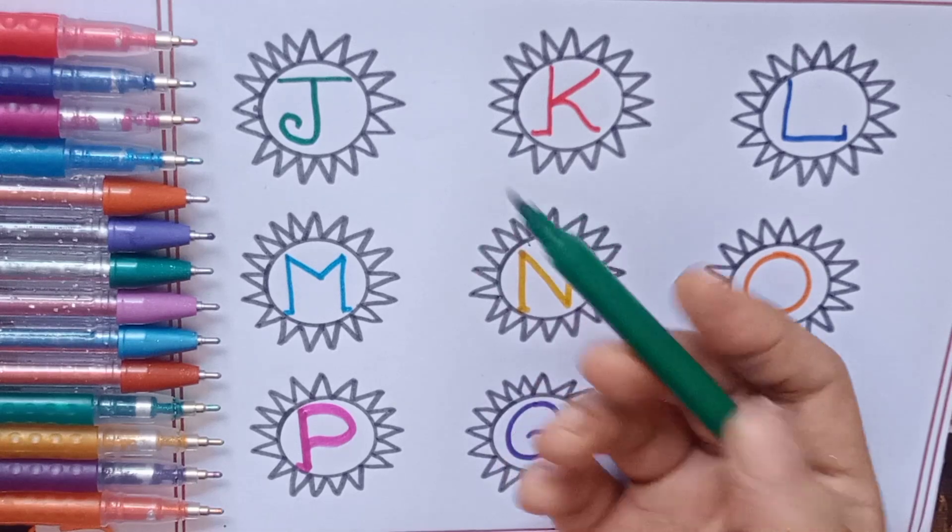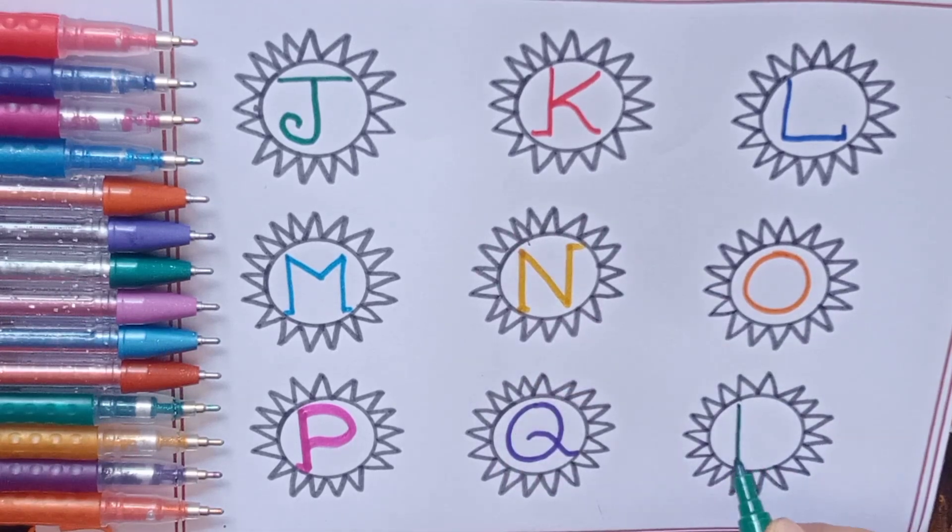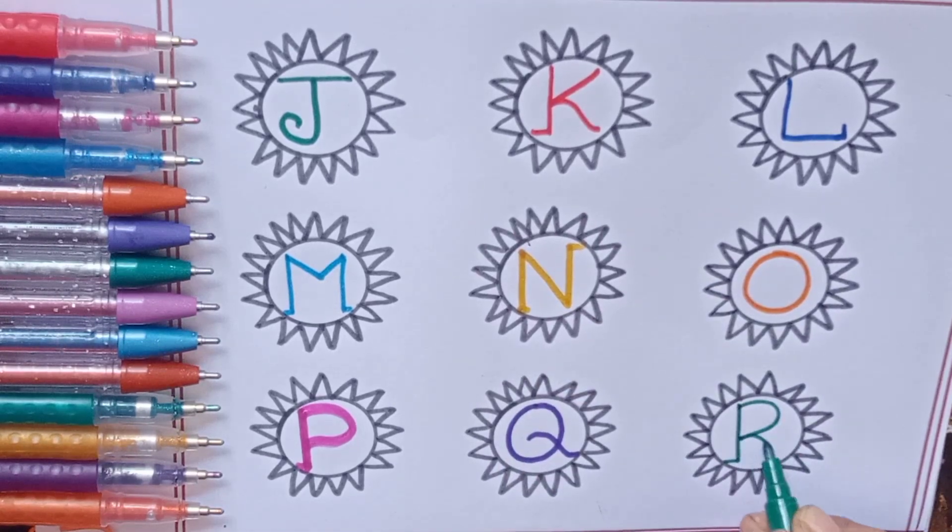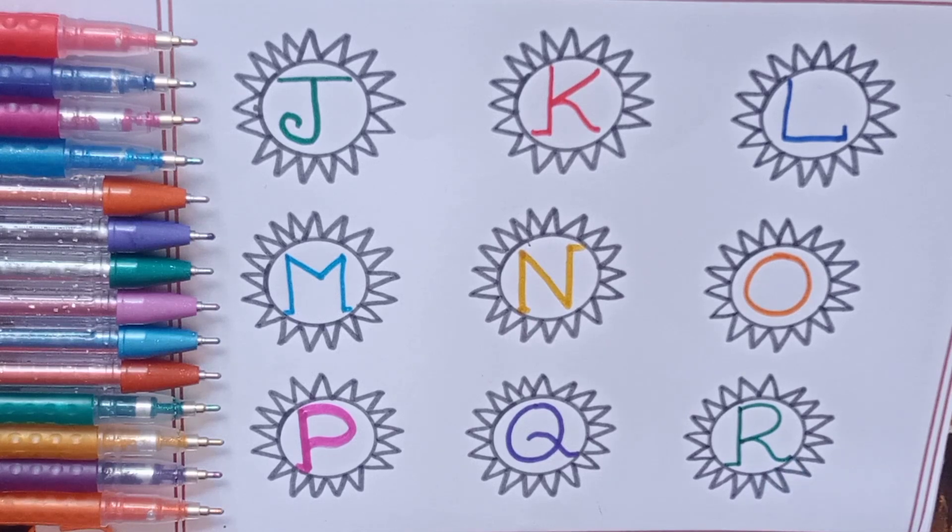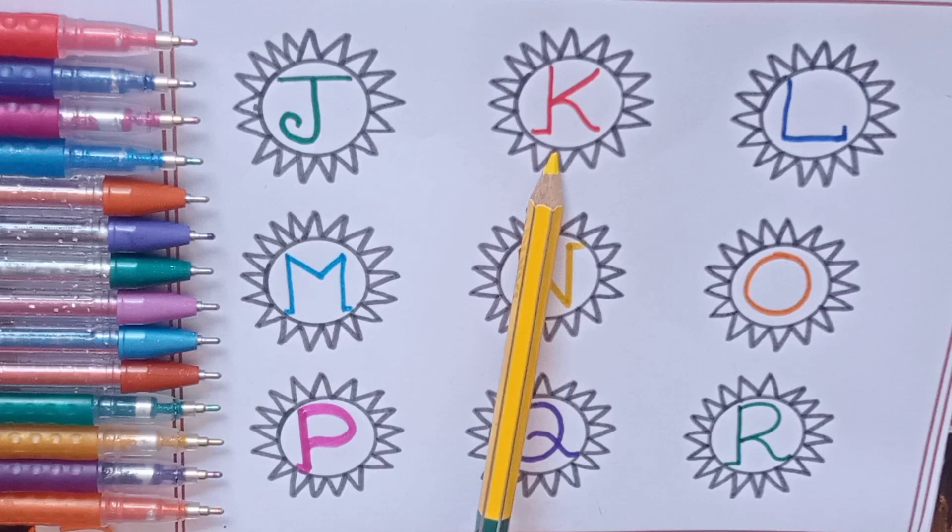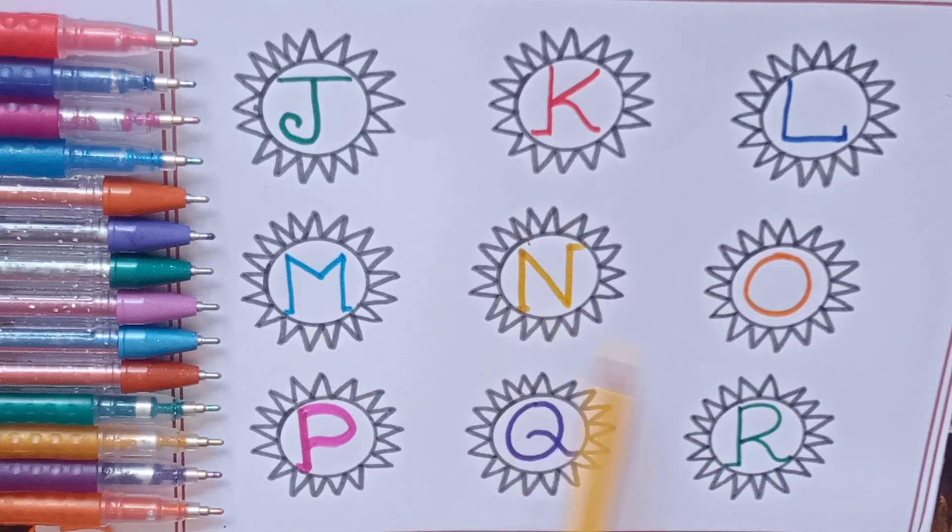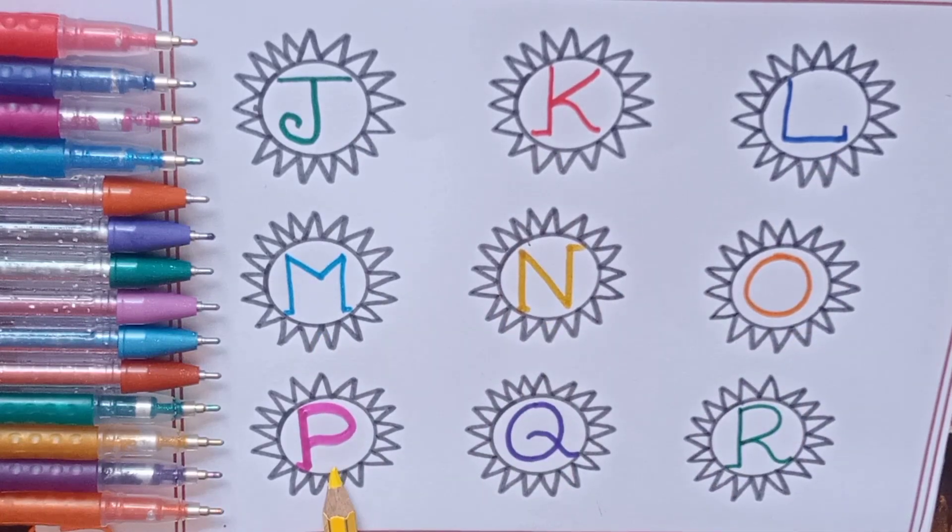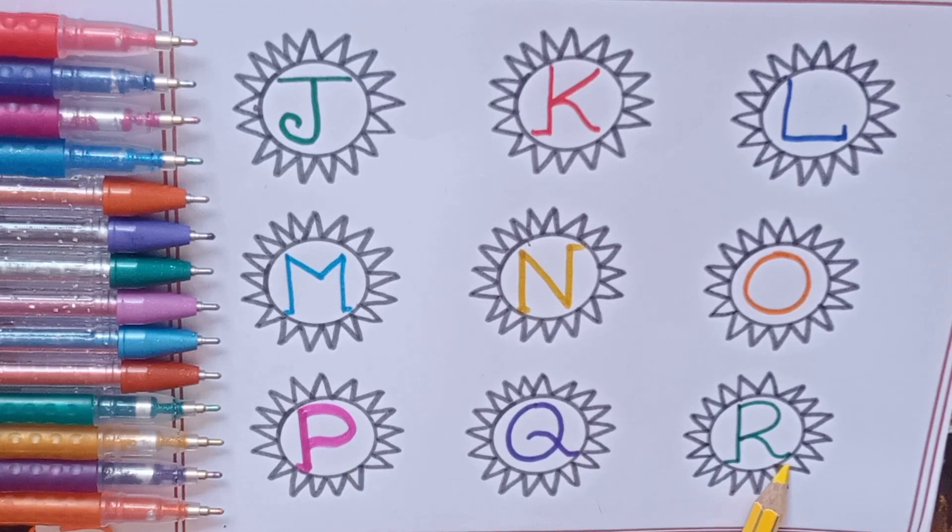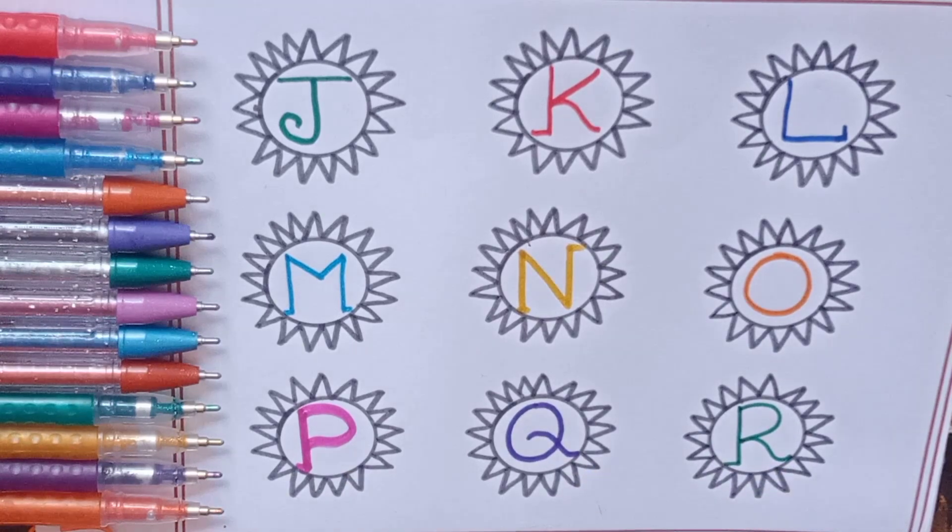Green color again, R, R for raincoat. Now say with me, kids: J, K, L, M, N, O, P, Q, R. Bye bye kids, keep learning. Thank you, bye bye.